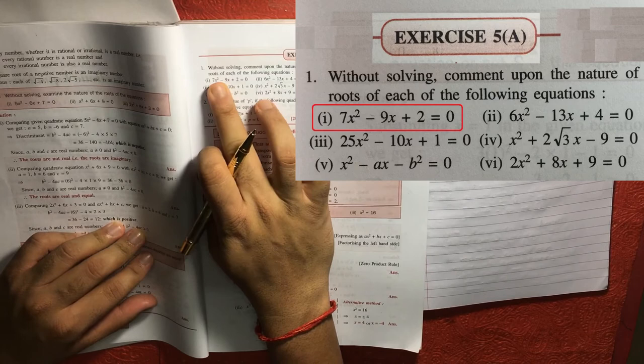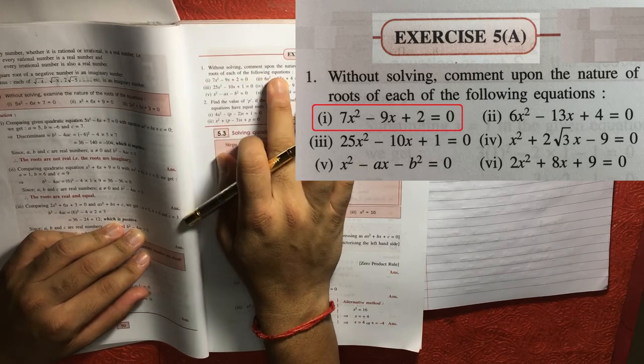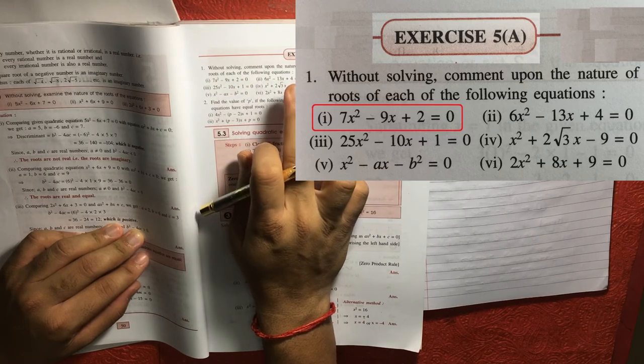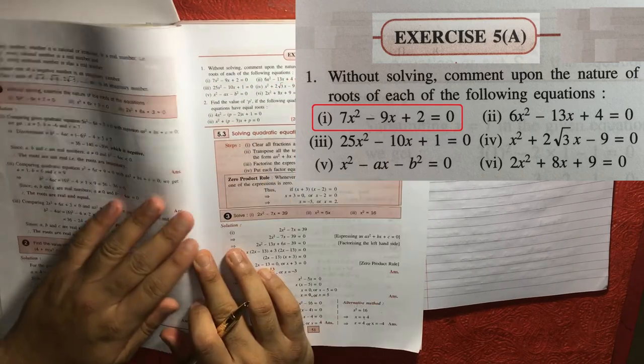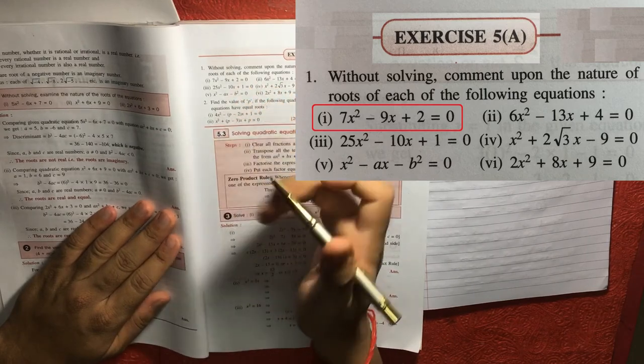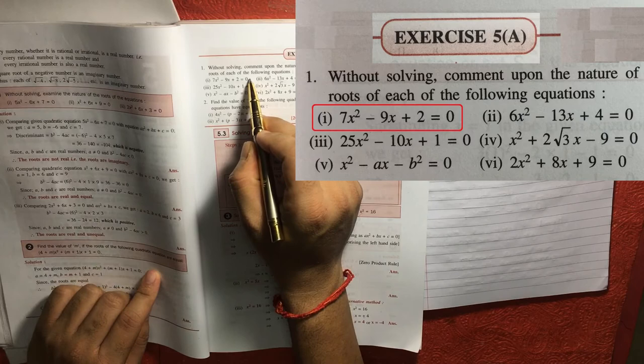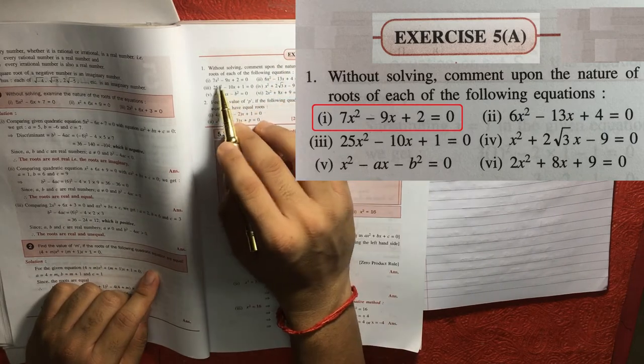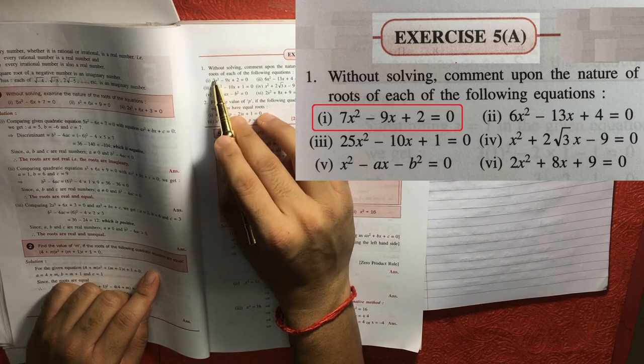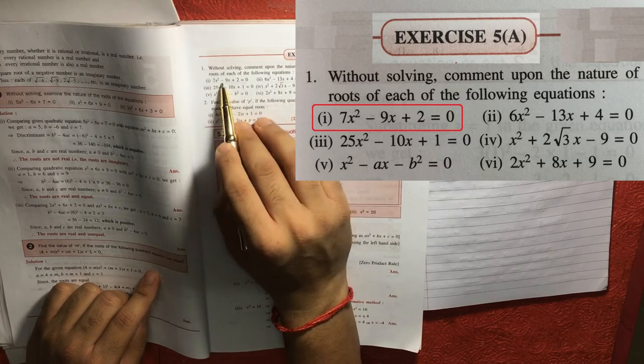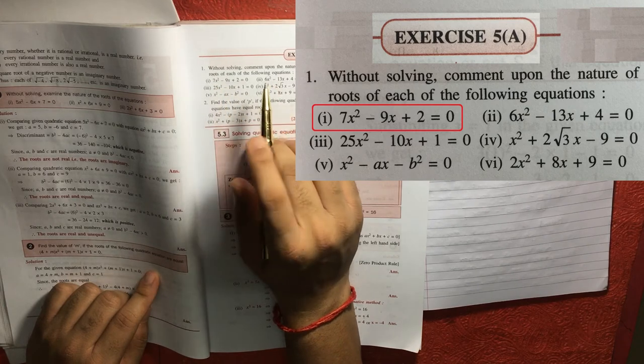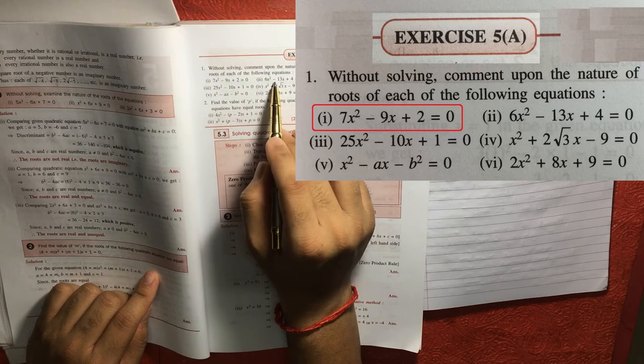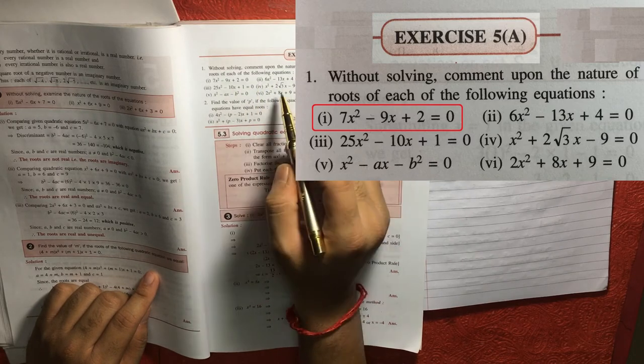So let me start the question now. The first question is saying, without solving, comment upon the nature of roots of each of the following equation. So if you ask me, I can explain you easily because this seems to be a real and unequal. This also seems to be real equal. I mean, I'm just calculating because even if you see, if you solve this, that's going to be greater than zero. So just by seeing this equation, you can also say that if you solve this 7x or 9x or 2, that will be greater than 0. Similarly, for second and third.